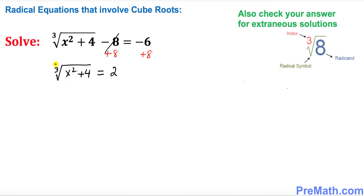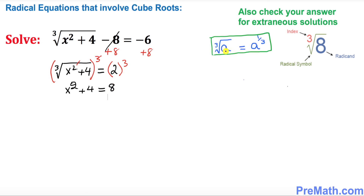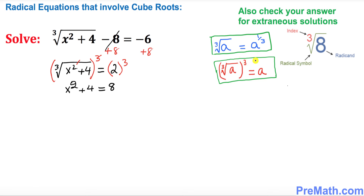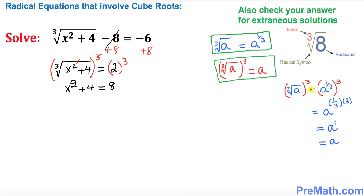Now we want to get rid of this cube root. In order to undo the cube root, we must raise both sides to the power of 3. The cube and the cube root undo each other, so we get x squared plus 4 equals 2 to the power of 3. Note that the cube root, when the index is 3, can be written as an exponent of one-third, and when you raise both sides to the power 3, those cancel to give just the base.